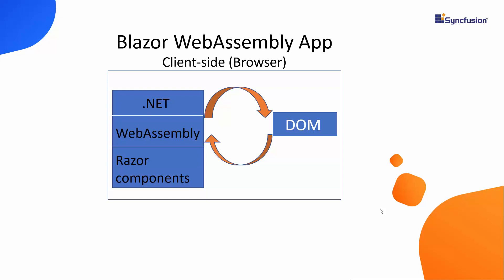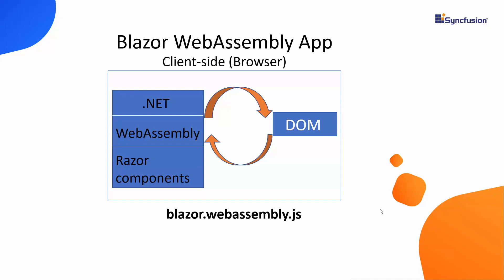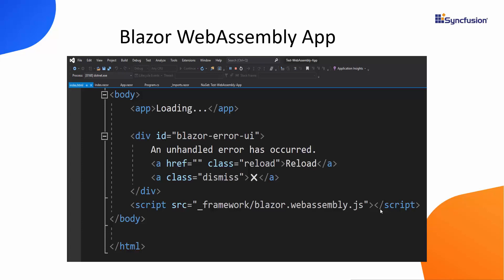To download all the necessary dependencies at the client side, the Blazor WebAssembly app uses a specific script file reference: blazor.webassembly.js. You can notice this Blazor WebAssembly file reference within the index.html file of your application.